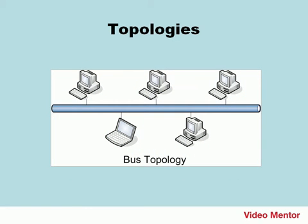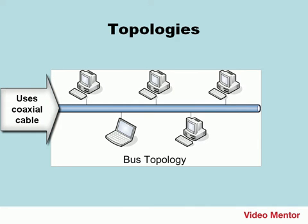Bus topology. You'll rarely see this setup. Notice that all the computers are connected to a backbone, not a central connecting device like a hub. This means that if you wanted to add or remove computers from a bus network, you would have to take the whole network down first. Coaxial cable is normally used in a bus topology, and it's limited in speed and really can't handle today's network's data throughput.